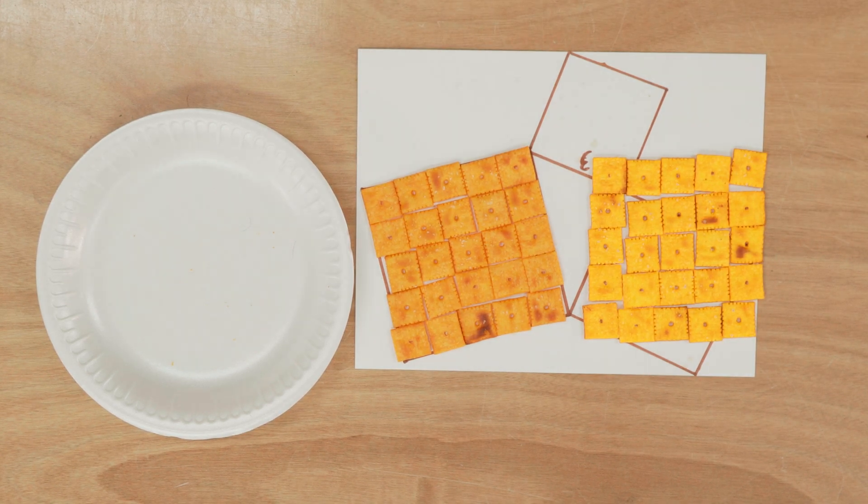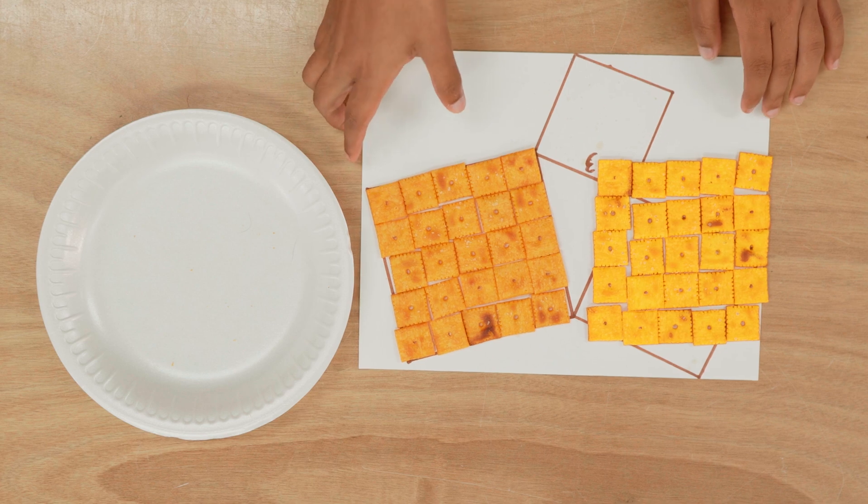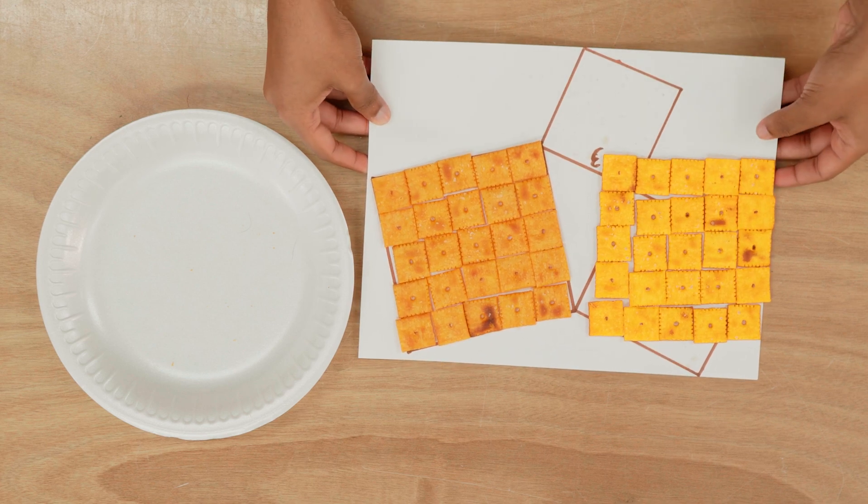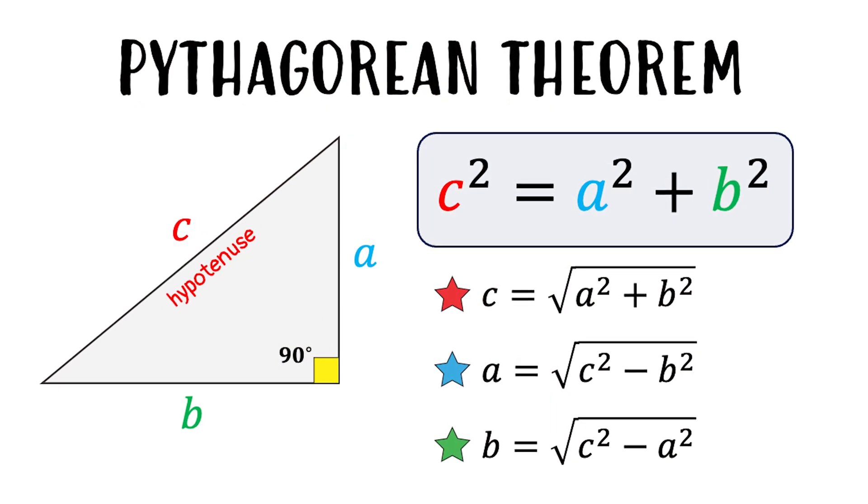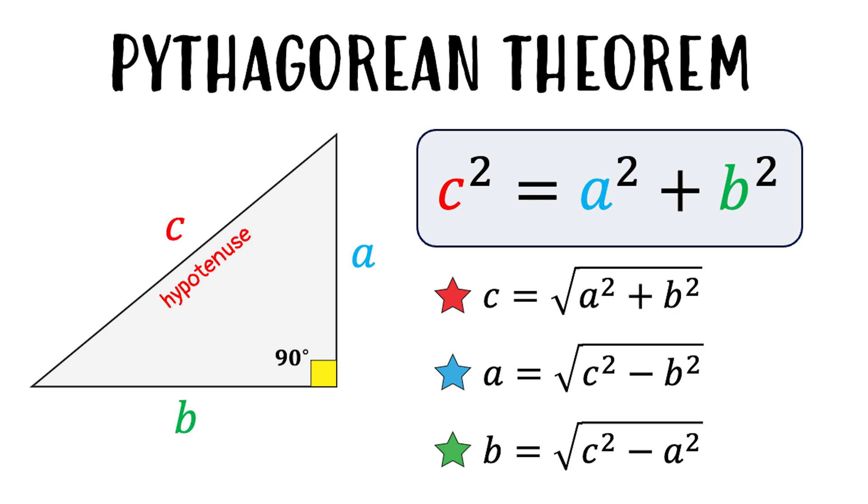Notice how the areas of the squares formed by the A and B side lengths add up to the area formed by the C side length. The Pythagorean theorem states that in a right angled triangle, the square of the hypotenuse side is equal to the sum of squares on the other two sides, which is what we saw with the Cheez-Its.